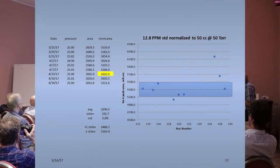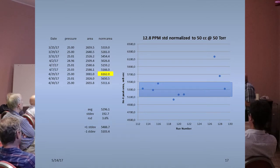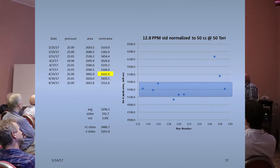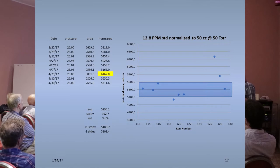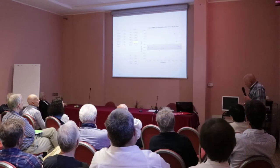Here are a few runs of the standard gas we have. If you ignore the one in yellow, which is an outlier, then the average has a relative standard deviation of around 3%, and that's probably pretty good for what we want to do.